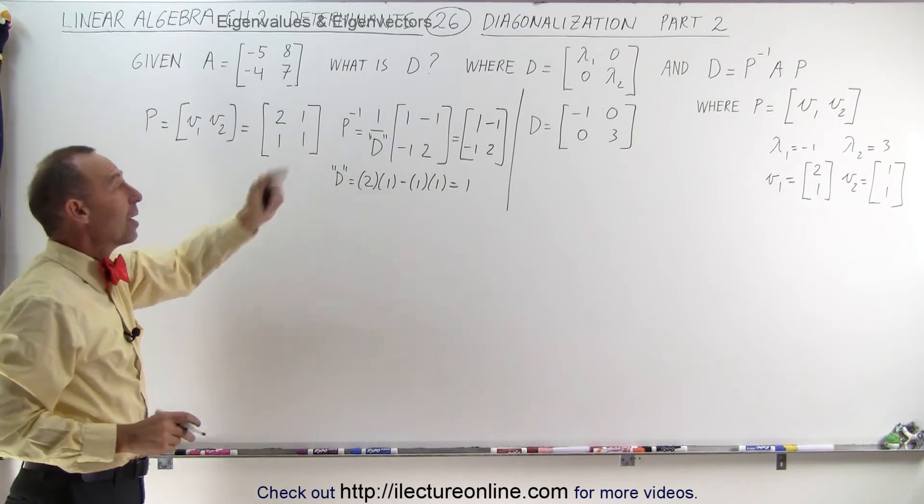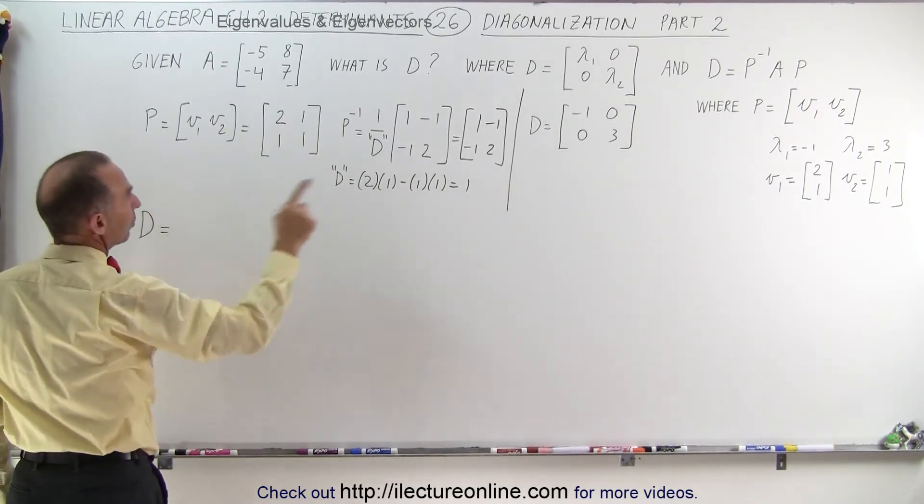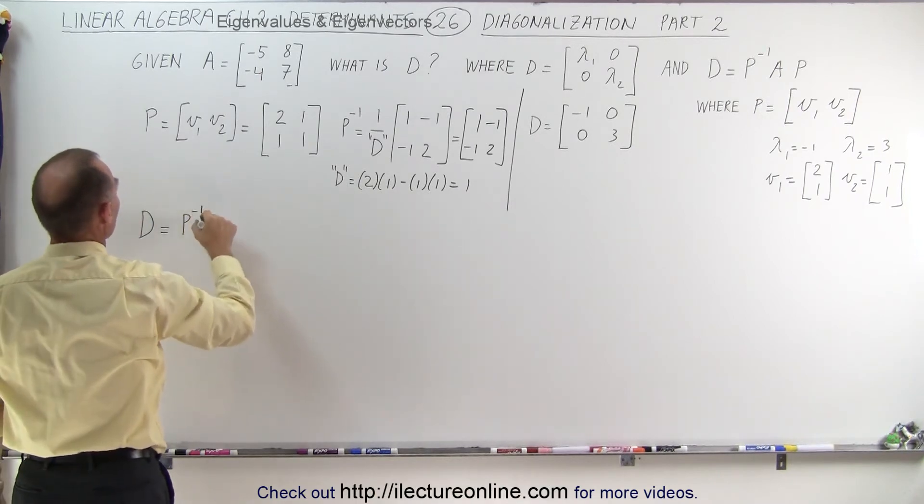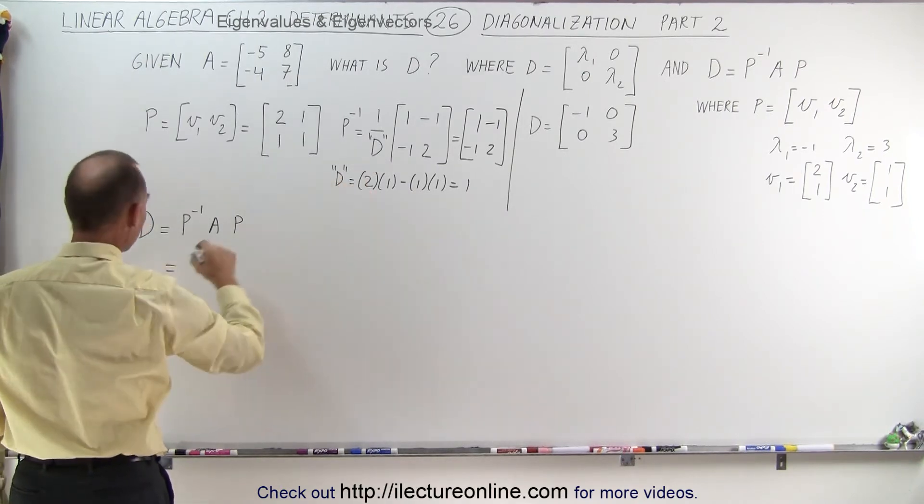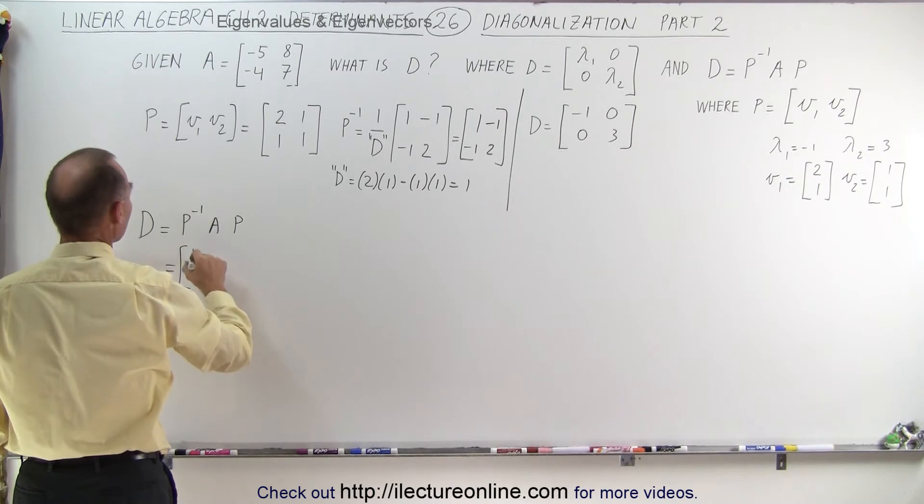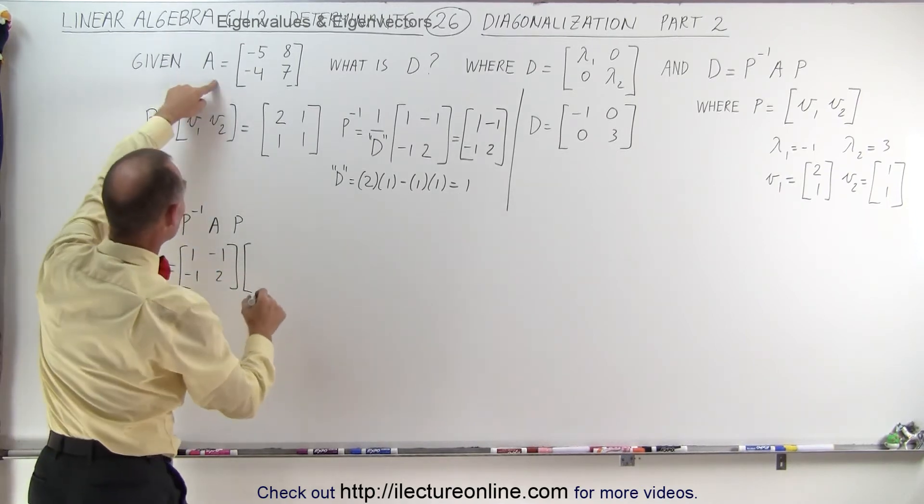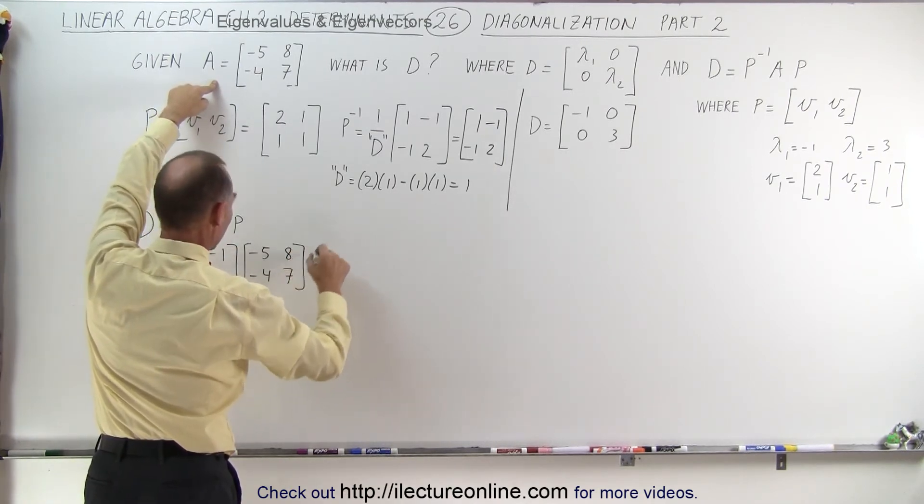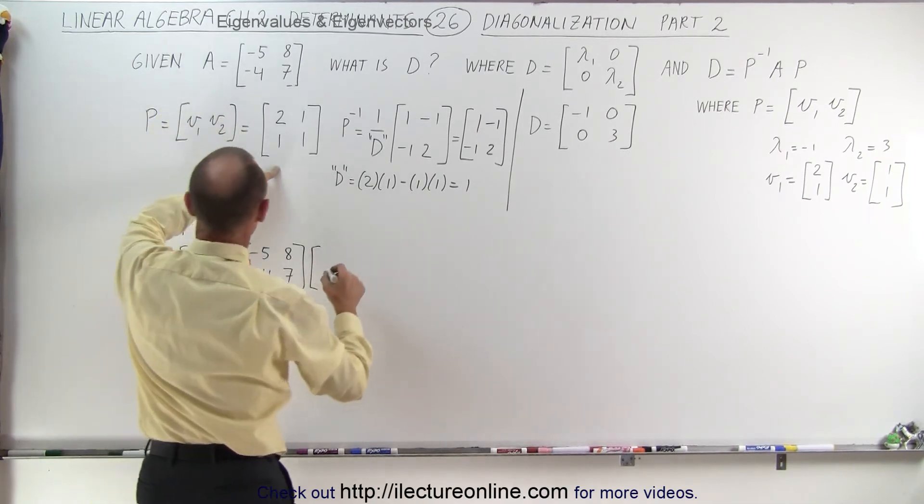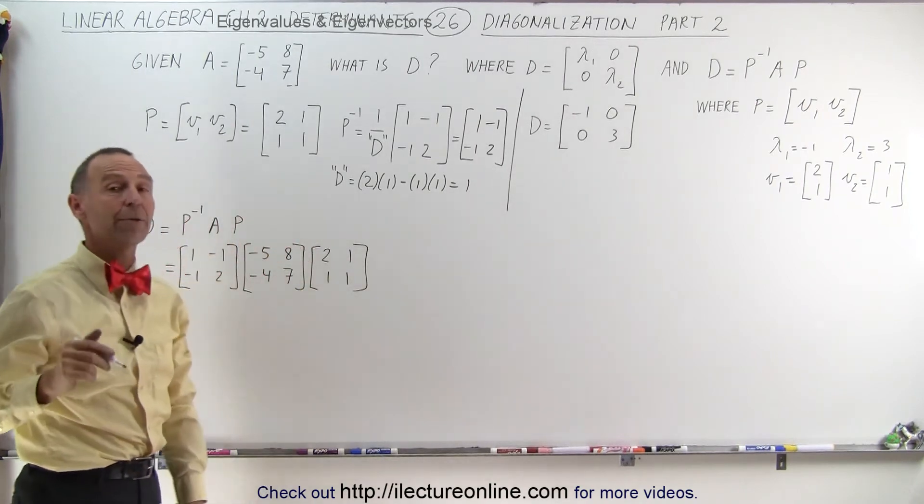Now we can say that the diagonalized matrix D is equal to the inverse of P multiplied times A multiplied times P, which means that this is equal to our inverse P matrix [1, -1, -1, 2], the A matrix which is [-5, -4, 8, 7] and then the P matrix which is [2, 1, 1, 1]. Alright let's go ahead and work this out.